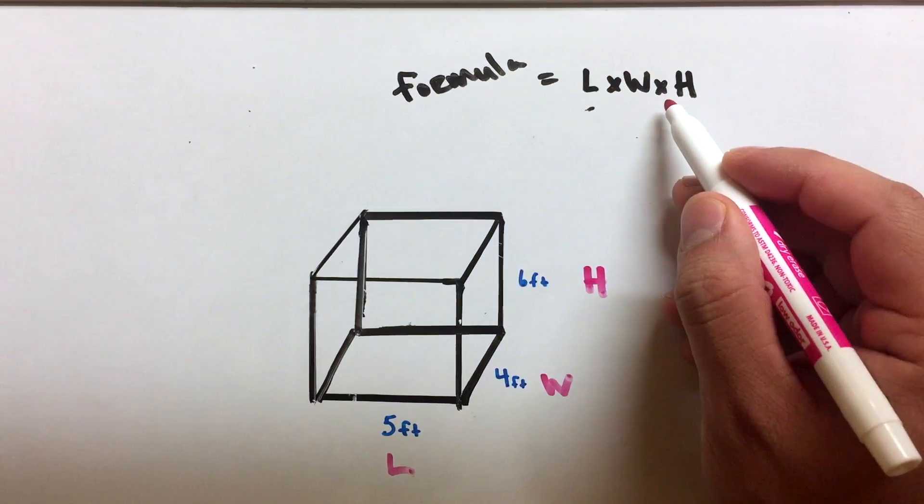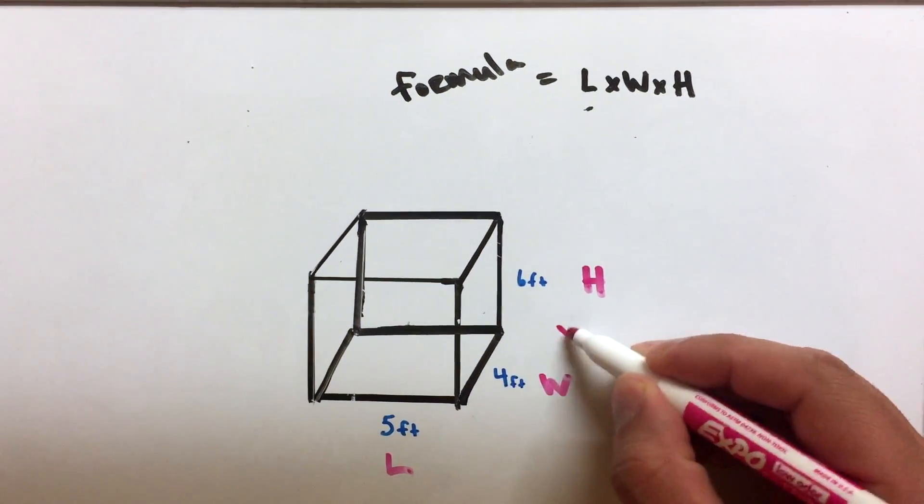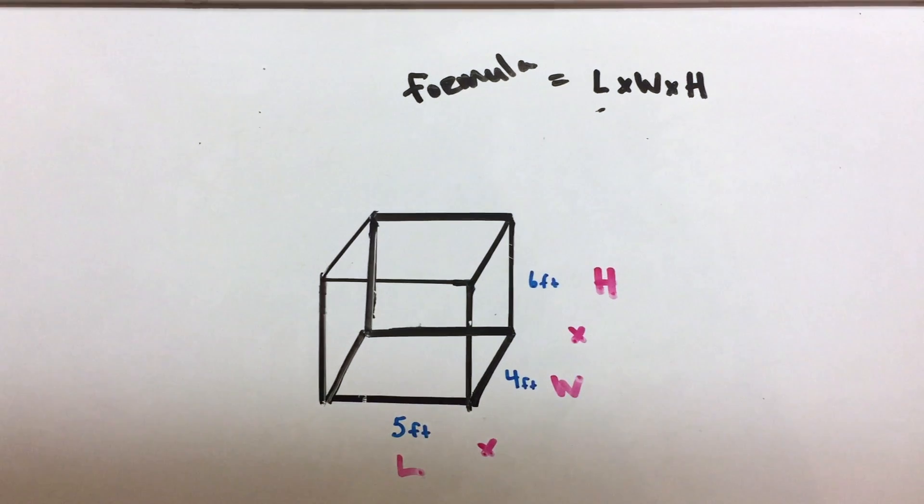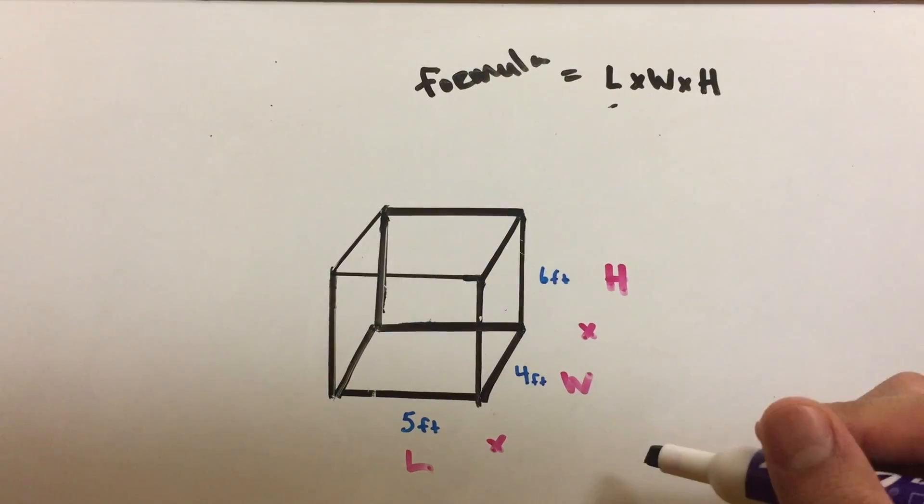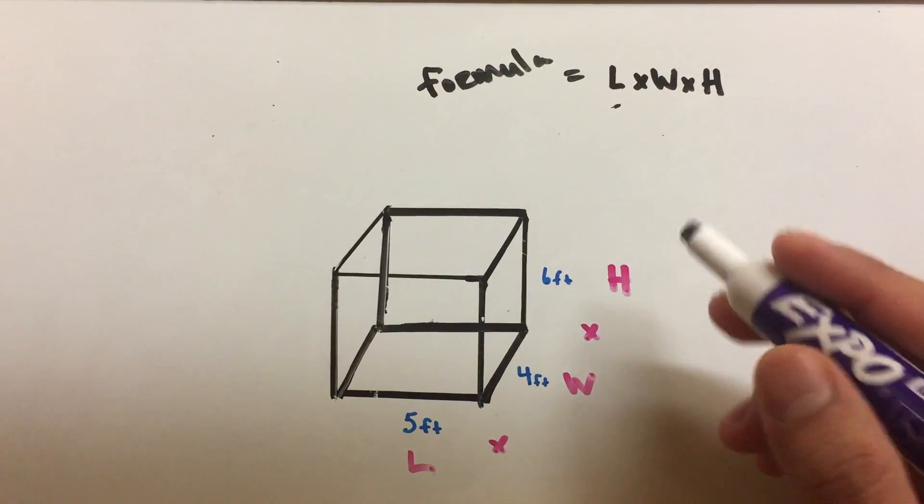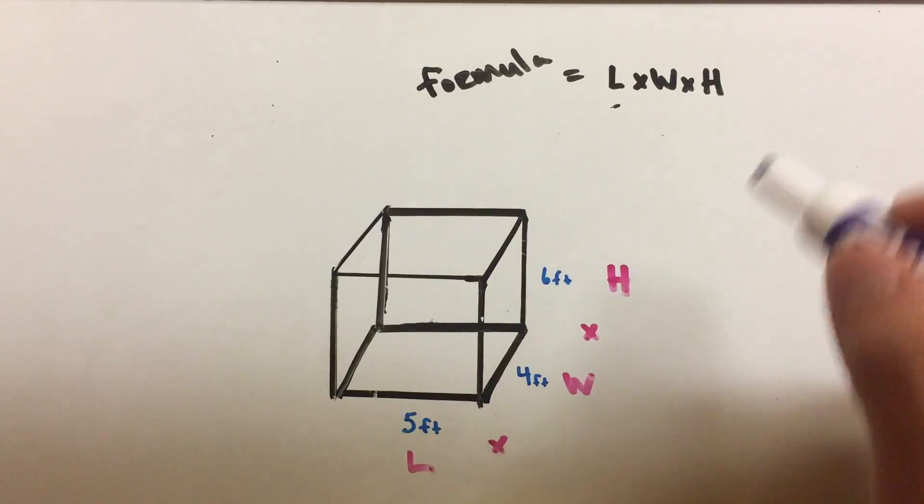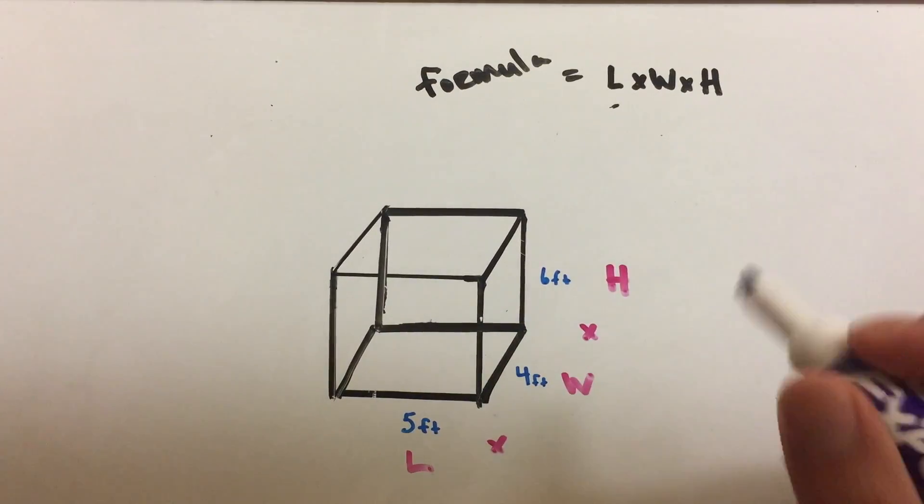Now let's not forget our multiplication signs here because you need to multiply all these up, just like that. Alright, now this is the easy part. Now that we have identified the length, the width, and the height, all you're gonna do is multiply them up.